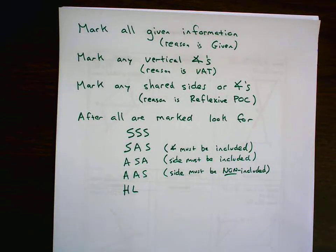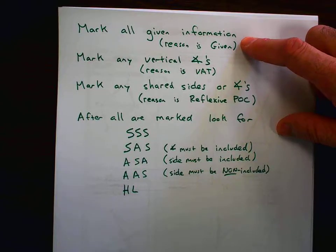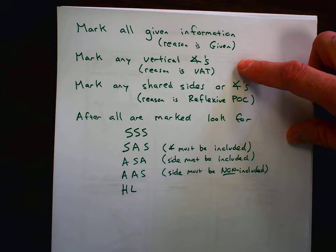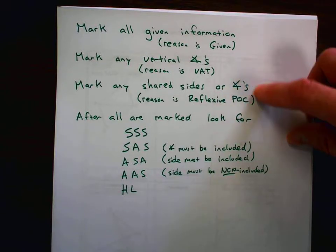My first thing I'd like to point out is whenever we're doing this, we're going to always want to first mark all of our given information, then we look for vertical angles, and the reason would be vertical angle theorem. We could mark any shared sides or angles, where the reason there would be reflexive property of congruency.